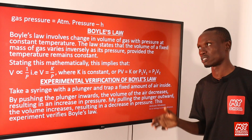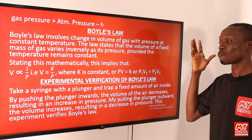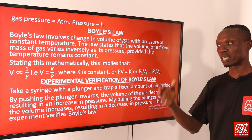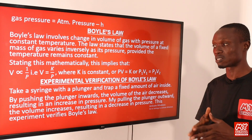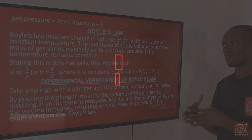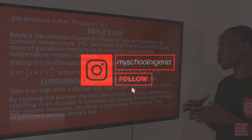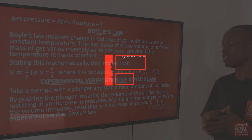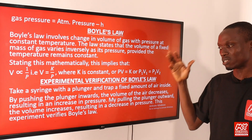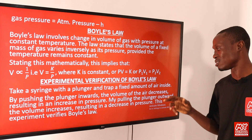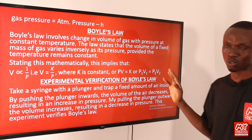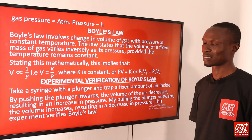We can verify Boyle's Law experimentally. Take a syringe with a plunger and trap a fixed mass of air inside. By pushing the plunger inwards, the volume of the air decreases, resulting in an increase in pressure. By pulling the plunger outward, the volume increases, resulting in a decrease in pressure. This experiment verifies Boyle's Law.